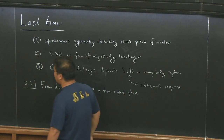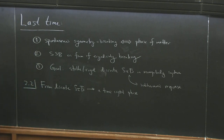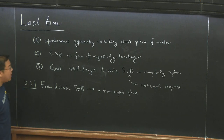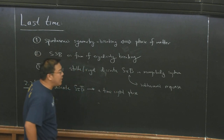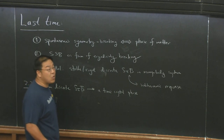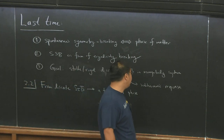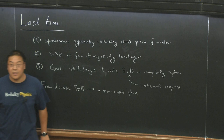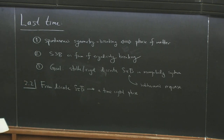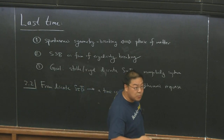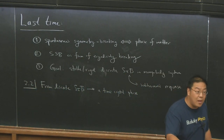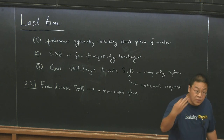We ended the last lecture with a goal: to discuss possible realizations, especially in the context of modern research, of stable or rigid discrete time translation symmetry breaking — or STTSB — in many-body systems that could be either classical or quantum mechanical. The spontaneous breaking of discrete time translation symmetry really means a sub-harmonic response on top of, for example, a discrete time step or a Floquet Hamiltonian.